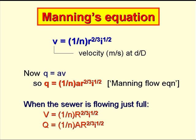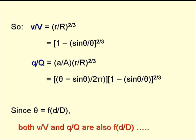When the sewer is flowing just full, we use the same equations, but write V, R, Q and A in capital letters. This enables us to calculate the velocity ratio, v/V, and Q/Q, the flow ratio, in terms of θ. Since θ is a function of the proportional depth of flow d/D, this means that v/V and Q/Q are both functions of d/D.